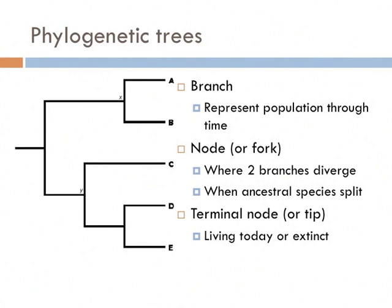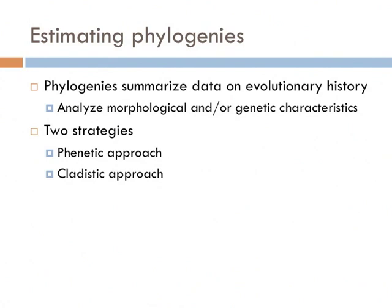A terminal node is represented by the tips of a tree — you can think of them as leaves of a tree. Terminal nodes represent species that are currently living on Earth, or ones that have gone extinct. In this phylogenetic tree, all the taxa represented by the terminal nodes are living. You can tell that because they all reach all the way to the right. If a species became extinct, the reach of the branch would not reach all the way to the right, and would be cut off somewhere before.